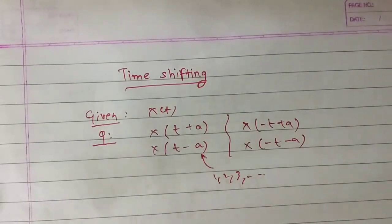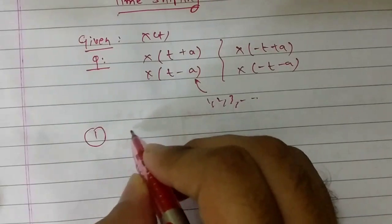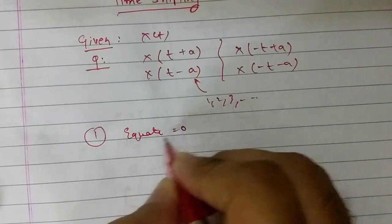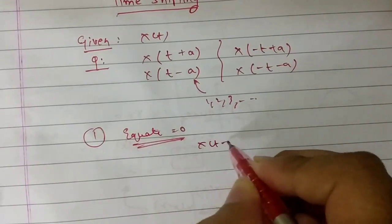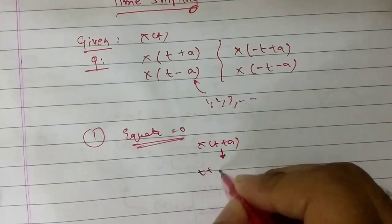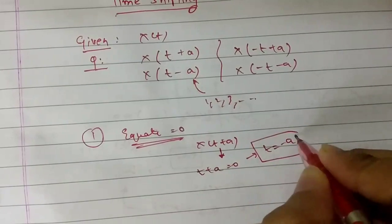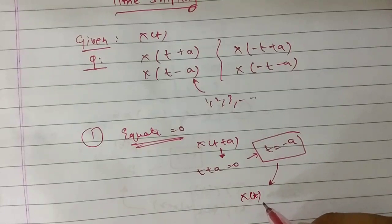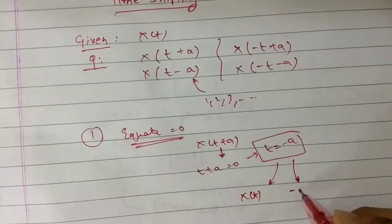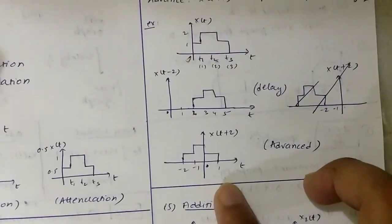Now we have to solve this question very quickly. The procedure goes like this: first, equate to zero. So if X(t+a) is given, equate t+a = 0, which gives t = -a. This means you have to draw the X(t) graph and the origin must be at -a.